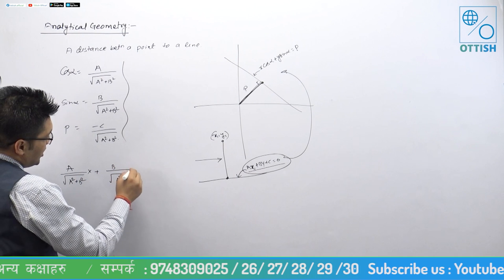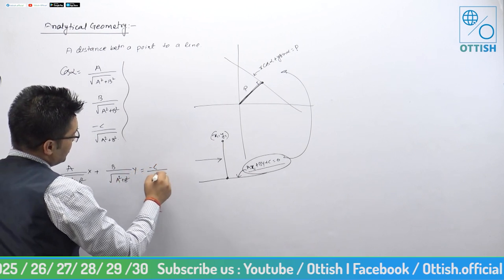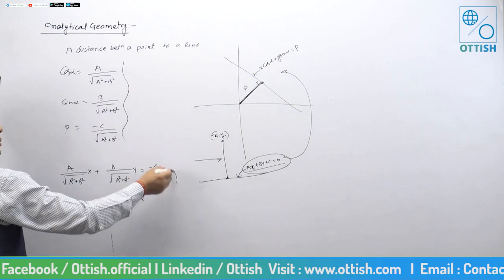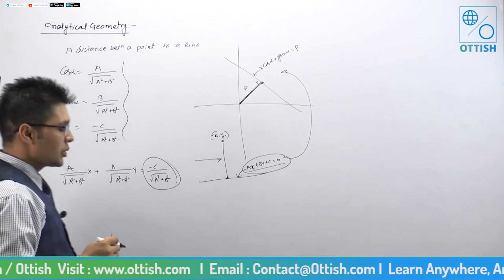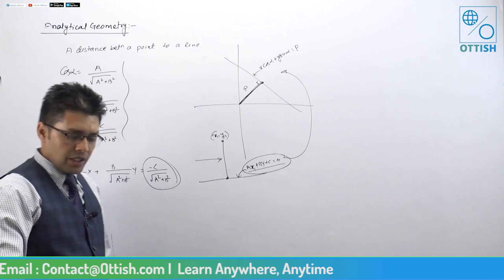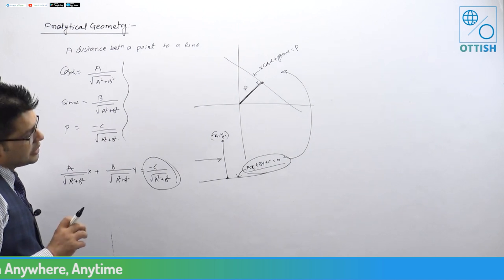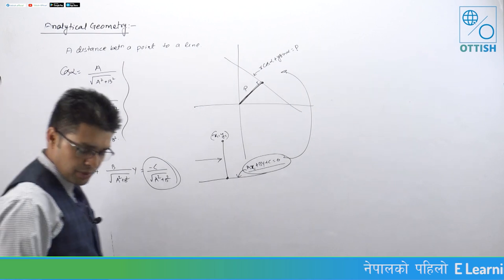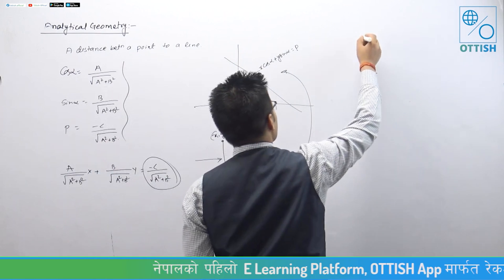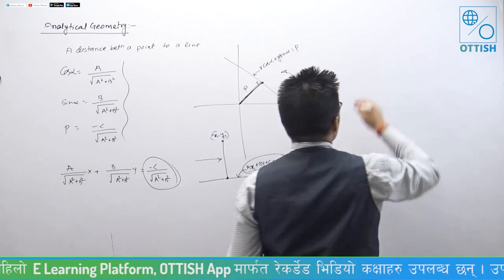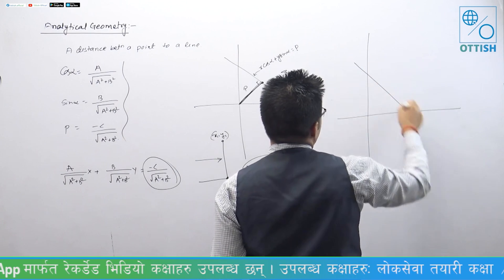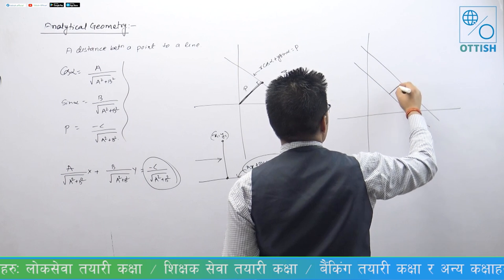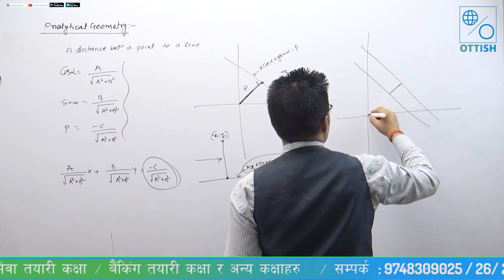Substituting, the line becomes: a by root over a squared plus b squared times x, plus b by root over a squared plus b squared times y, is equal to minus c by root over a squared plus b squared.